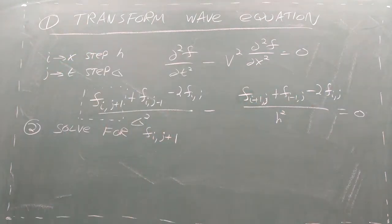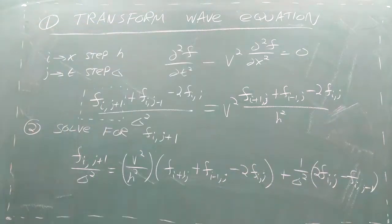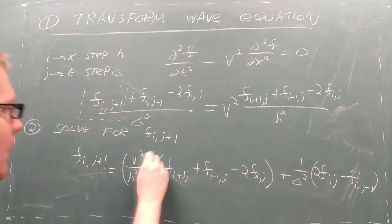Second, we solve for f, the shape of the string one time step after we pluck it. This process follows the same pattern we've seen before, but we end up with a problem.